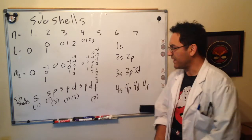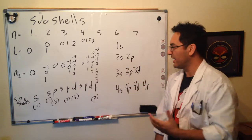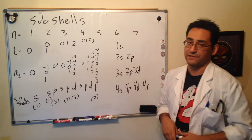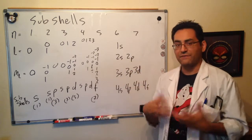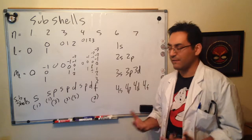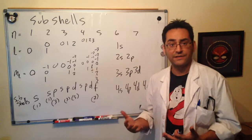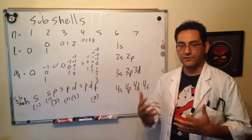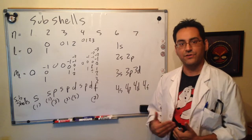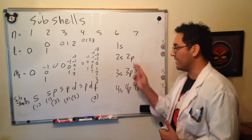I should say that while all of these are degenerate, meaning they're all the same energy level, as soon as we start putting electrons in here, things get complicated. Different orbitals will have different degrees of penetration. What that means is certain electrons in them can get closer to the nucleus than others, depending on the shape of these orbitals.